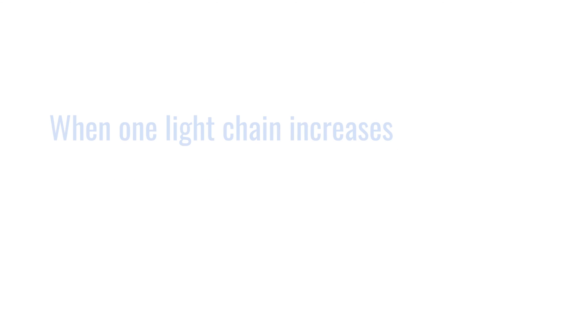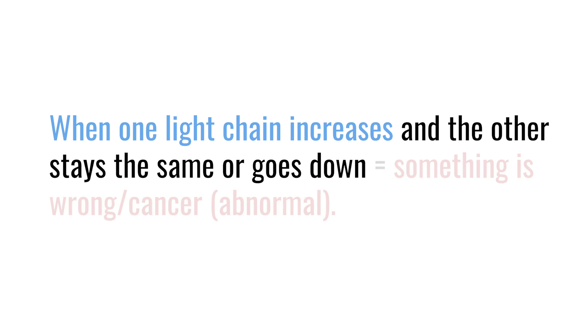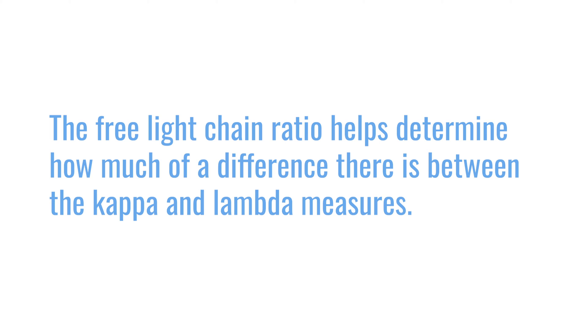If we see that one of them is the one going up while the other is staying stable or going down, that tells us that something is wrong and there's a group of cells making more of one element than the other — and that's where we need to focus. In myeloma, that's exactly what we see: an abnormal, disproportionate increase of one of those free light chains compared to the other. The ratio is what helps us determine how much of a difference there is between the two.